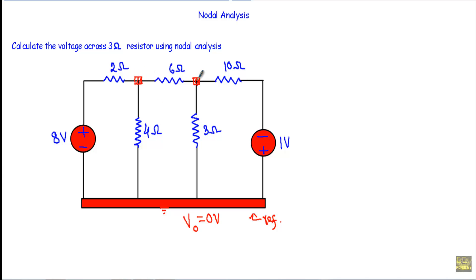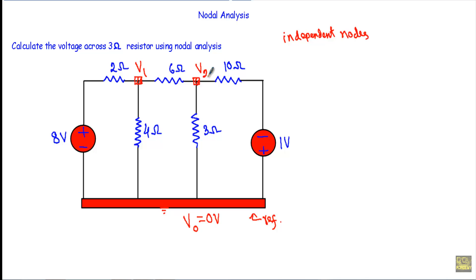Node 1 and node 2 indicate the independent nodes. After that I will assign node voltages V1 and V2 to these nodes. After that I will apply KCL to each of the independent nodes. So I will apply KCL at node number one. We have to assume all the unknown currents are outgoing.